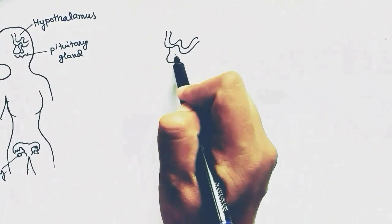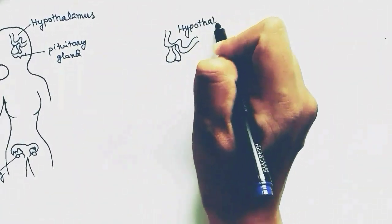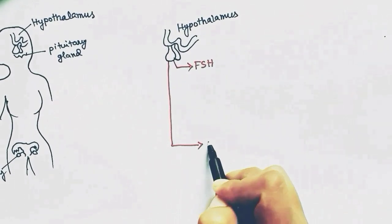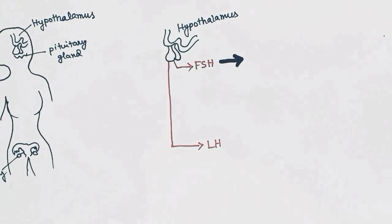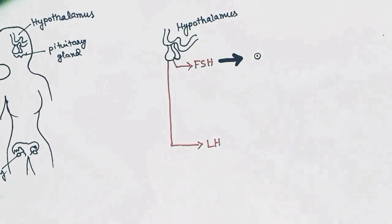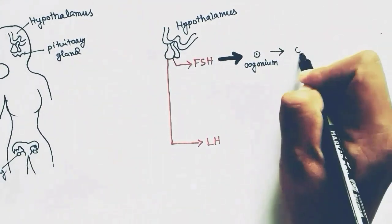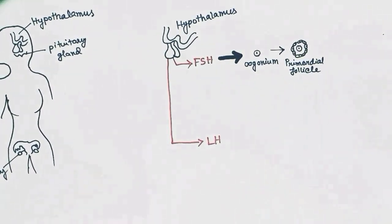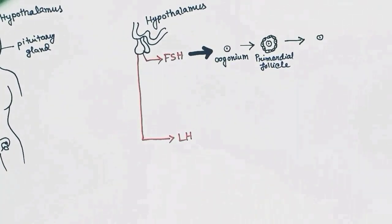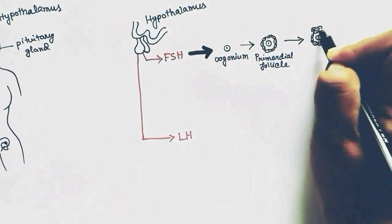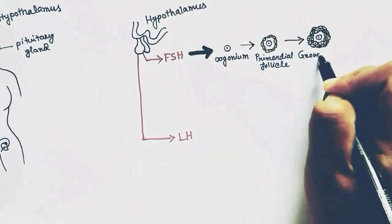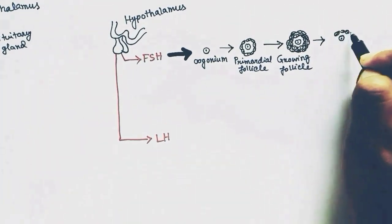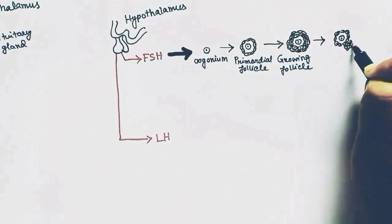These two hormones have different effects on regulation of oogenesis. FSH stimulates the growth of ovarian follicles in the ovary. From oogonium to primary oocytes and primordial follicle to more developed growing follicles and ultimately the graafian follicle is developed by the effect of FSH hormone.